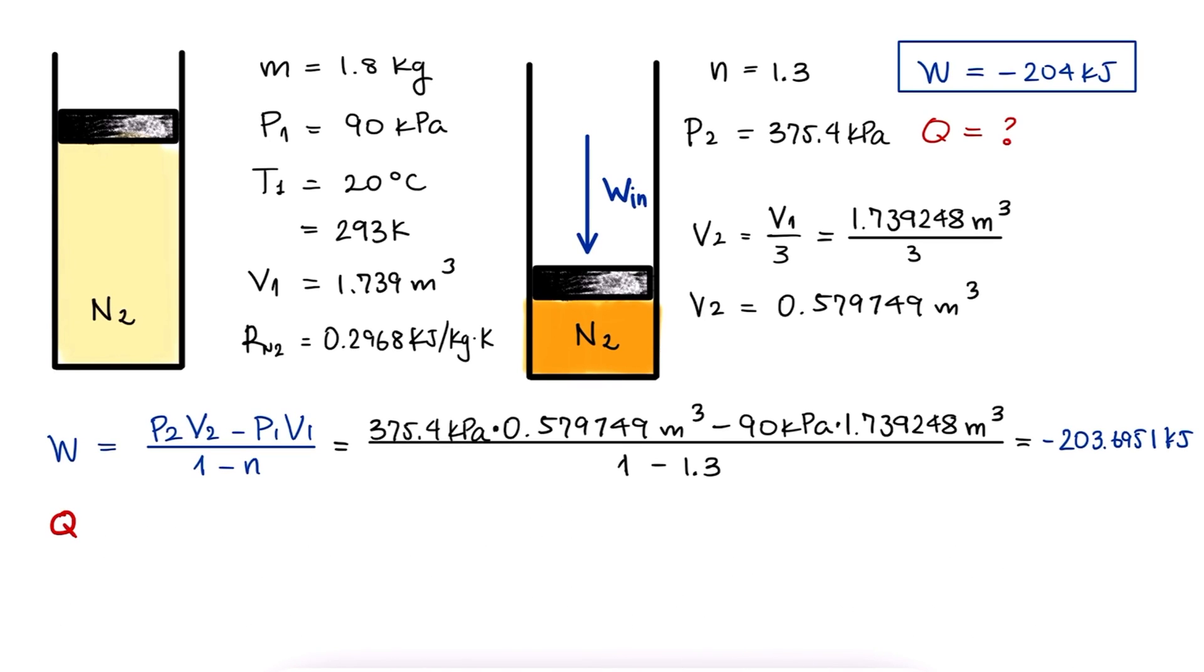As for the heat, since Q minus W is delta U, Q is equal to W plus delta U. The change in internal energy is mCV delta T, and yes, that is the specific heat at constant volume. Remember that we can use either specific heat depending on what we're looking for, not necessarily because of the type of process or system we have. In this case, we're only missing the change in internal energy, and that by definition uses CV.